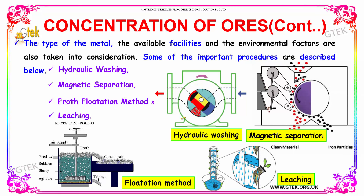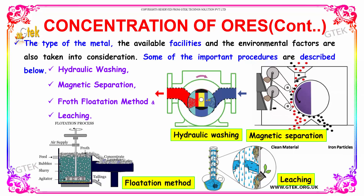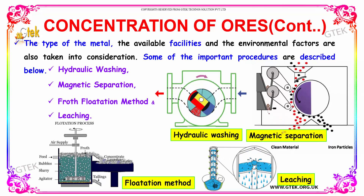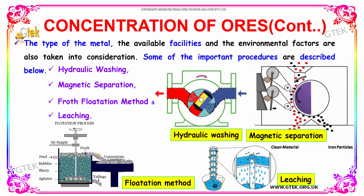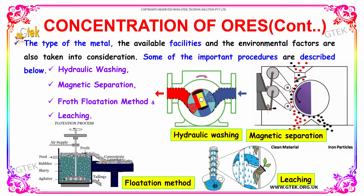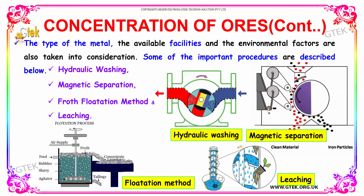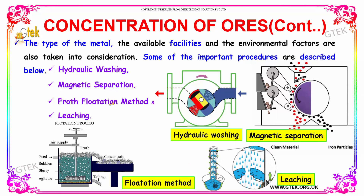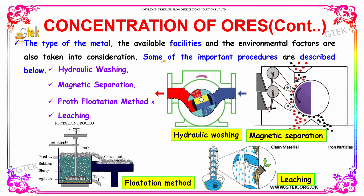The first one is hydraulic washing — through water, we try to wash it with strong rotation. The second one is magnetic separation, which you can see here. The third one is the froth flotation process, where froth comes out. And finally, leaching. These are the procedures used for concentrating ores to extract the metals.